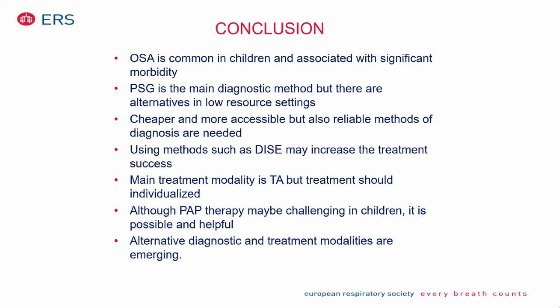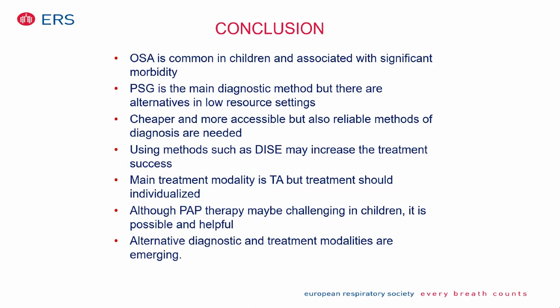In conclusion: obstructive sleep apnea is common in children and associated with significant morbidity. Although polysomnography is the main diagnostic method, there are alternatives especially in low-resource settings. Cheaper and more accessible but reliable methods of diagnosis are needed. Using methods such as DISE may increase treatment success. Adenotonsillectomy remains the main treatment, but treatment should be individualized and sometimes combined. Although PAP therapy may be challenging in children, it's definitely possible and very helpful. Alternative diagnostic and treatment modalities are emerging.